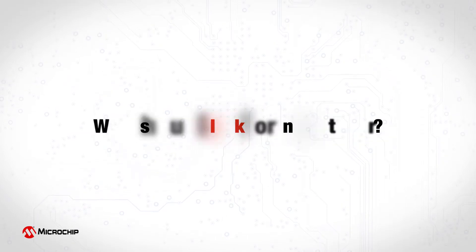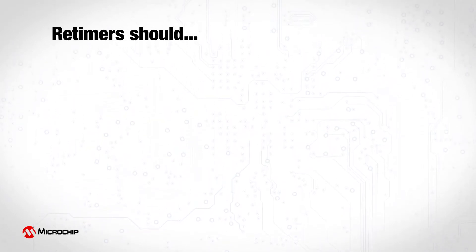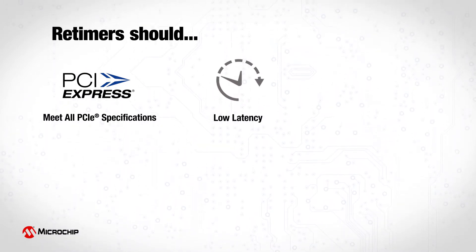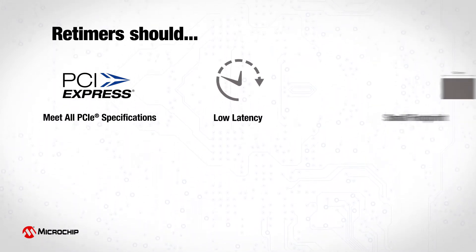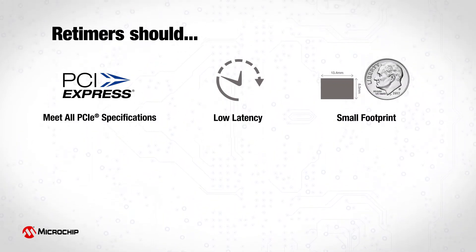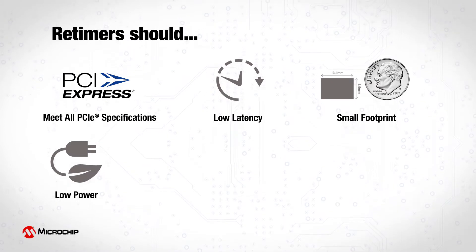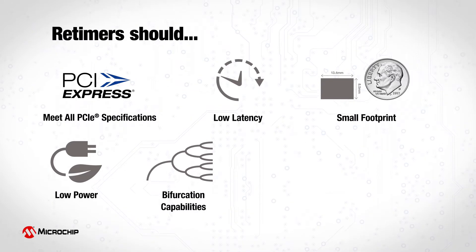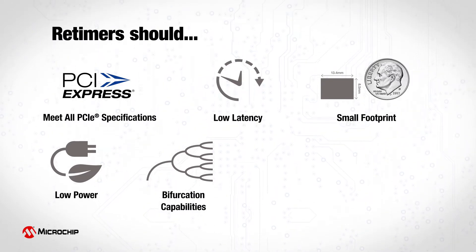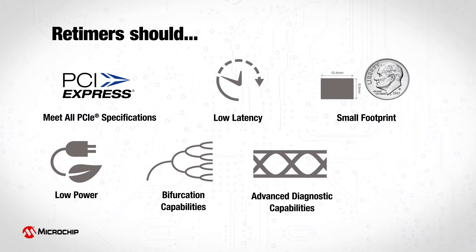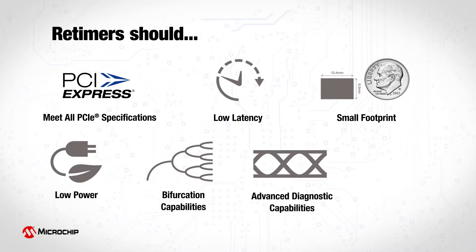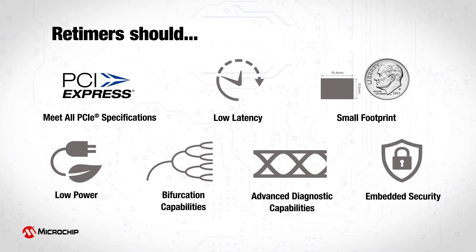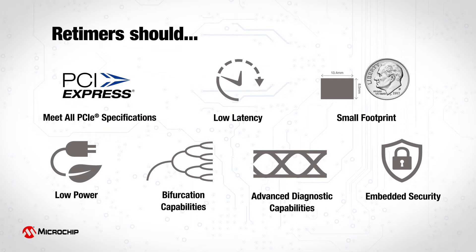What should I look for in a re-timer? Re-timers should: meet all PCIe specifications to ensure interoperability; have low latency to maximize performance; have a small footprint for space-constrained application designs like riser boards; have low power usage to reduce total cost of ownership; have flexible bifurcation for all PCIe widths from x1 up to x16; offer advanced bring-up and diagnostic capabilities to debug issues and improve time-to-market; and have embedded security features for secure access to peripherals and diagnostics.